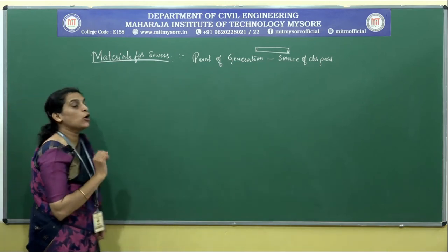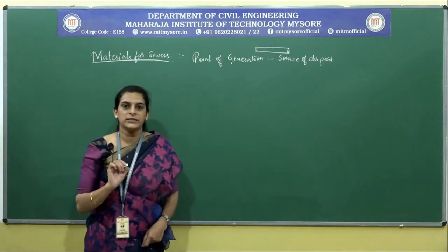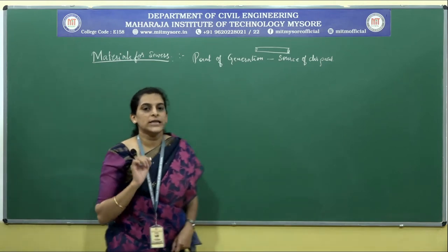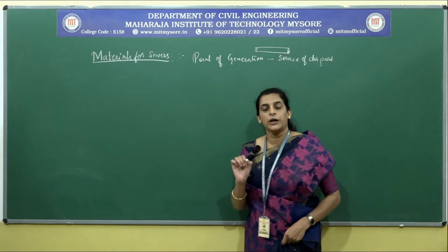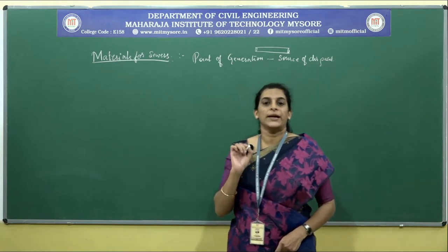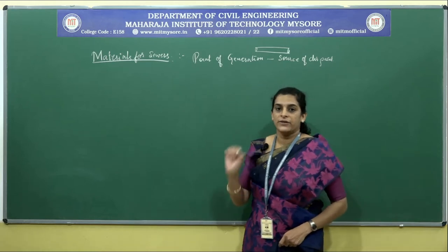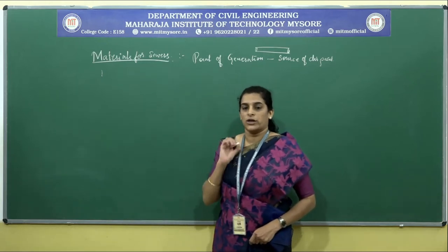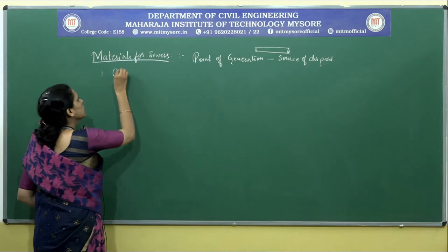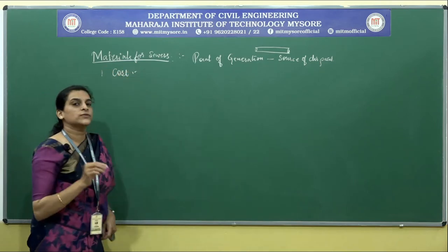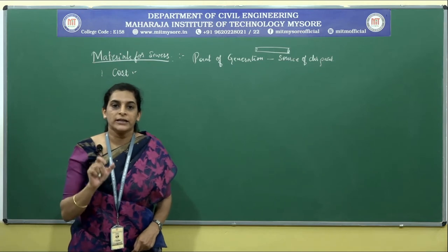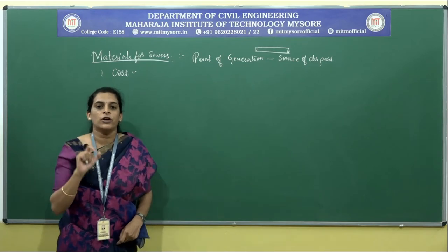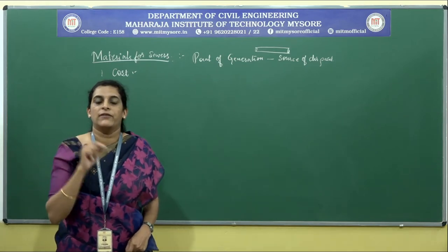We shall discuss the different materials used for construction of sewers. Prior to that, we shall understand the factors to be considered for selection of the sewer material. The first factor is cost. The cost of the sewer material should be moderate and durable — it should not be so high that a community cannot afford it in terms of the tax levied on them.